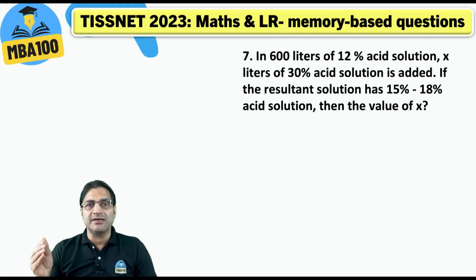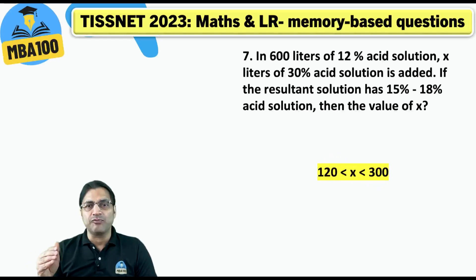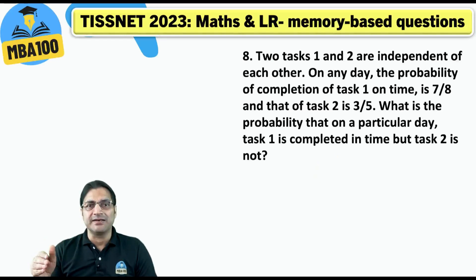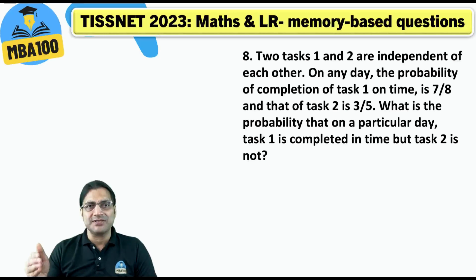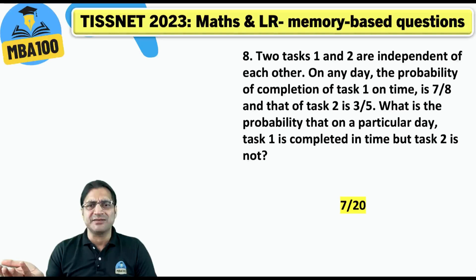600 liters of 12 percent acid solution — the answer was X is greater than 120 and less than 300. Next, a simple question on probability, but many people do not feel comfortable with it somehow. The answer is 7 by 20.